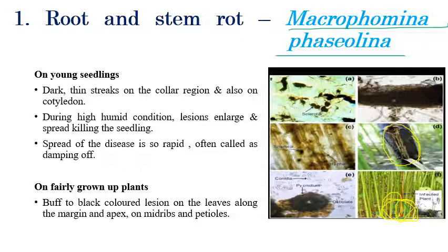High humidity highly favors Macrophomina phaseolina and this disease spreads very rapidly. It is often called damping-off disease. Bark shredding can also be observed, with streaks and shredding visible on the root region.